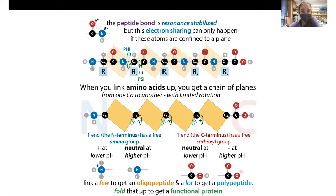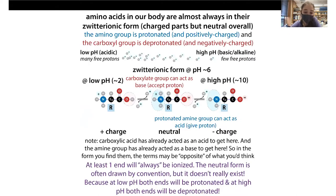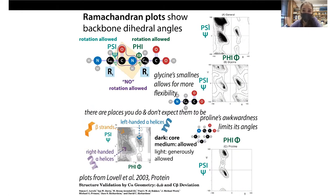You can have phi rotation between the nitrogen and the alpha carbon, and psi rotation between the alpha carbon and the carbonyl carbon, but you can't rotate around the double bond. So you end up with restricted motion — it's like something's clashing into you when you try to rotate. Therefore there are specific angles that amino acids tend to take when they link up into chains, and we can plot these angles on a Ramachandran plot showing backbone dihedral angles.